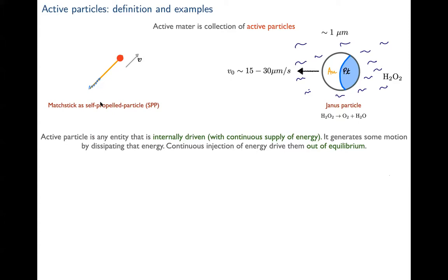Active particles are agents driven by a continuous supply of energy, which they use to generate mechanical motion. Since they're continuously driven, they're inherently out of equilibrium. A more concrete experimental example: a one-micrometer gold particle half-coated with platinum in a hydrogen peroxide solution. The platinum reacts with H₂O₂, creating surface stress that propels the particle at 15–30 micrometers per second — many body lengths per second — as long as the reaction continues.